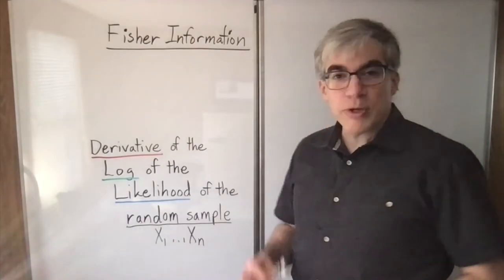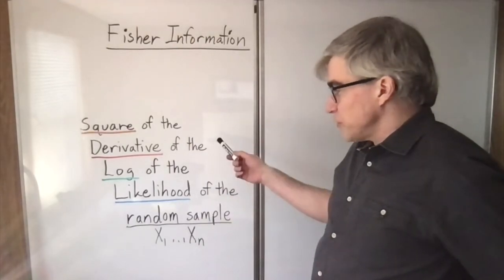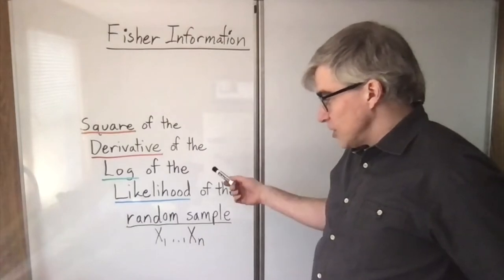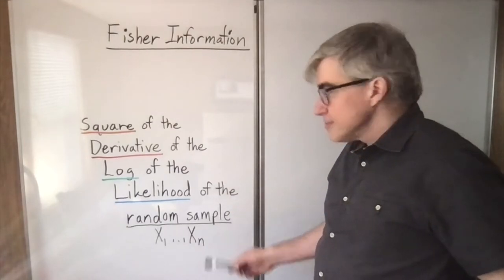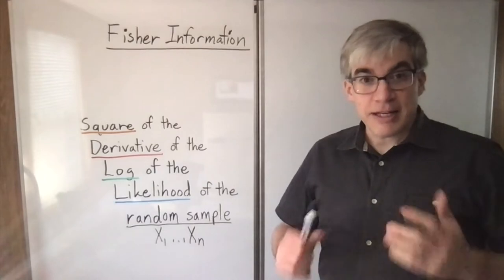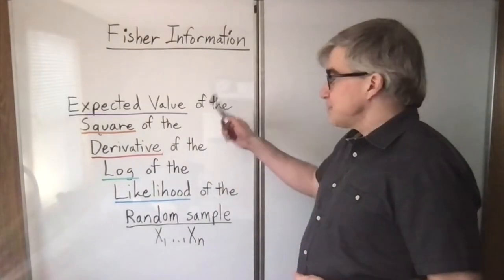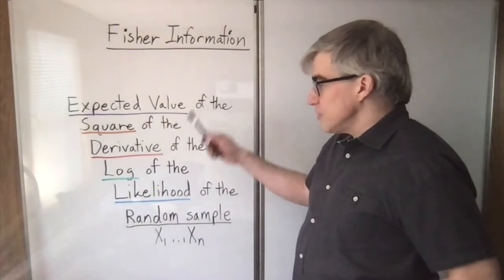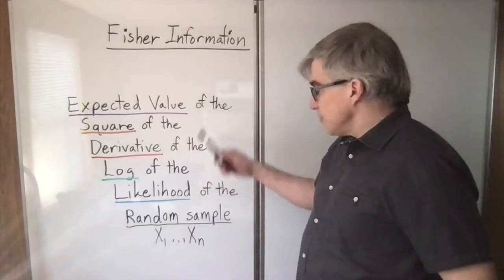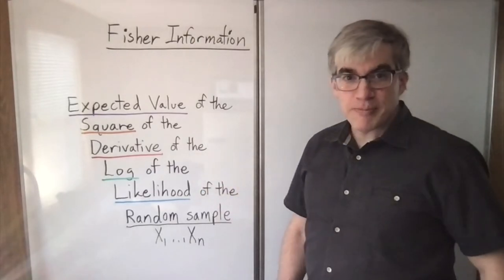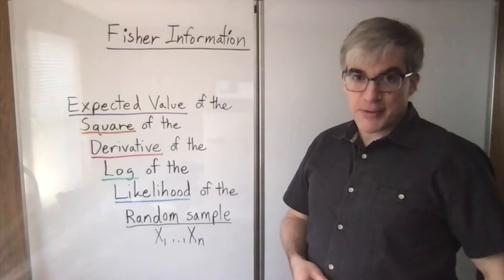Now we're going to square it. So now we have the square of the derivative of the log of the likelihood of the random sample. Now we're going to take the expected value — the expected value of the square of the derivative of the log of the likelihood of the random sample — and that is the Fisher information.